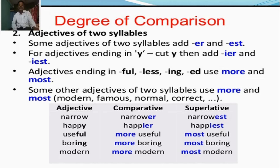Some other adjectives of two syllables use more and most. For example: Adjective — comparative — superlative. Narrow — narrower — narrowest. Useful — more useful — most useful.